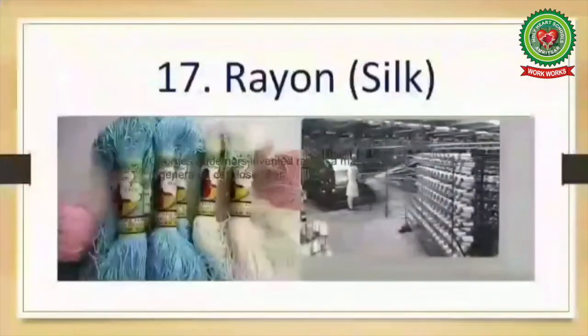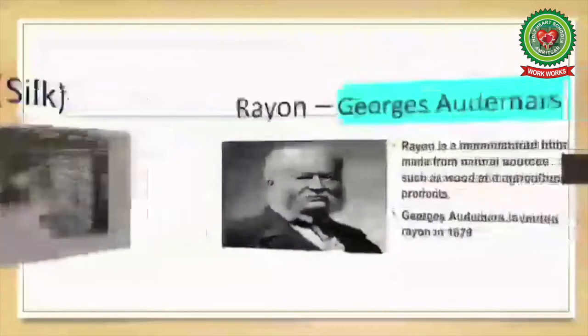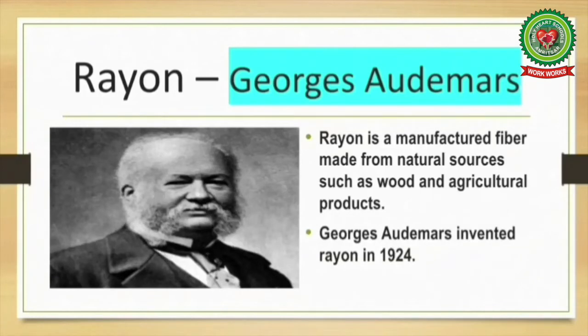The next invention is rayon. Rayon is a manufactured fiber made from natural sources such as wood and agricultural products. George Audemars invented rayon in 1924.